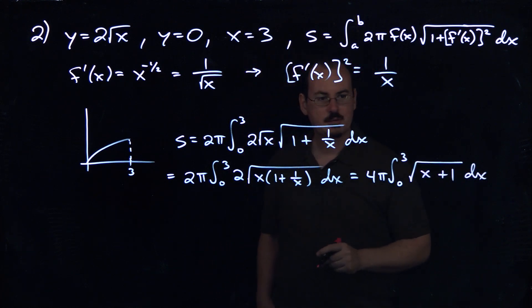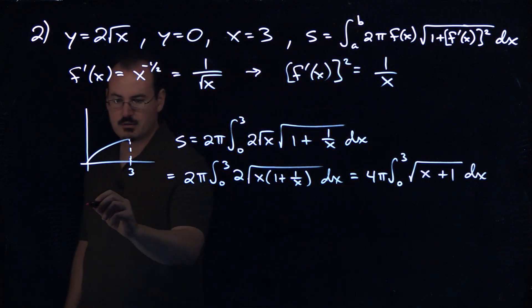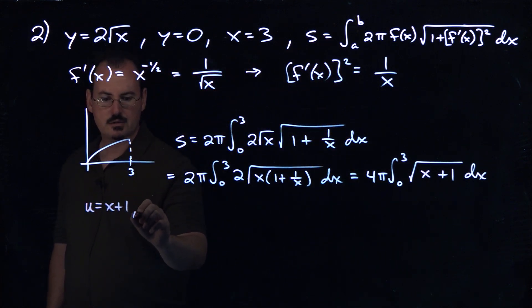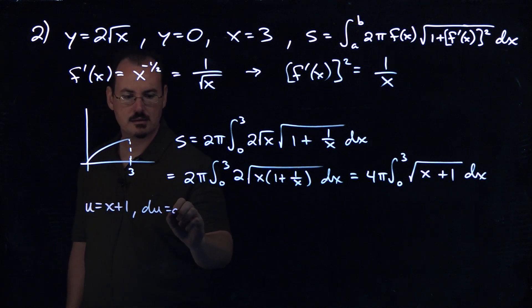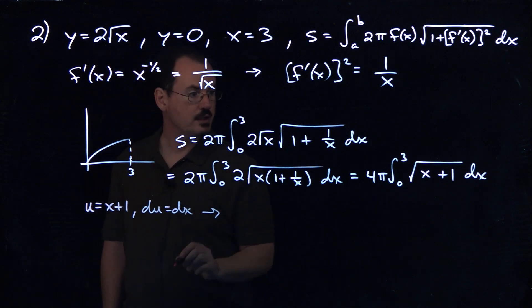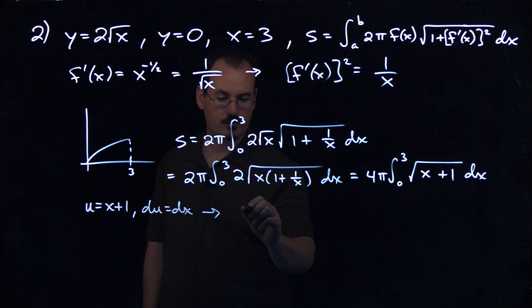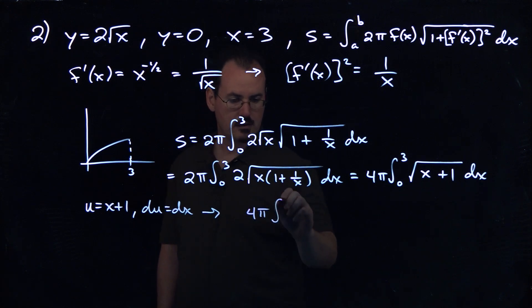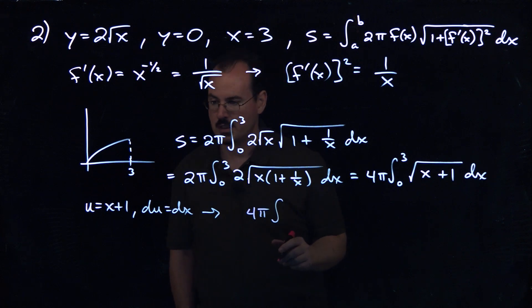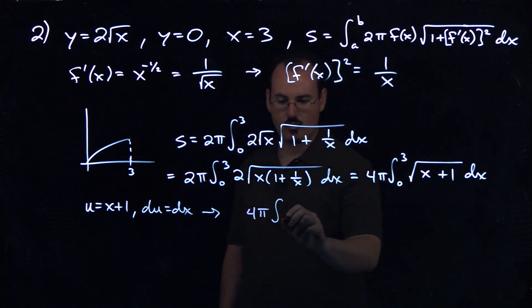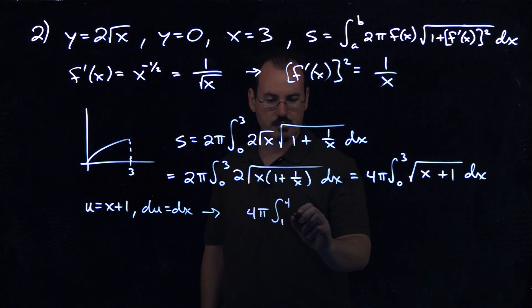Okay, so we can do a substitution on that. We can say that u is equal to x plus 1. So du is dx. And so the integral then becomes 4 pi integral from, now since I changed that, that's going to become 1, this is going to become 4. So we'll get the square root of u, that's u to the 1 half power du.